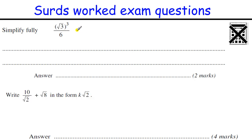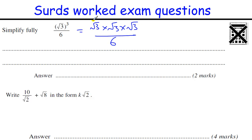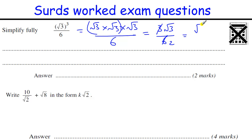Simplify this fully. We've got root 3 cubed over 6, which is root 3 times root 3 times root 3. Root 3 times root 3 is just 3, so that's 3 root 3 over 6. A 3 goes into the 6 twice, so that simplifies to root 3 over 2.